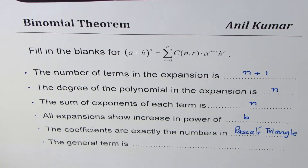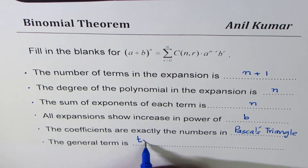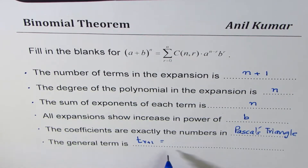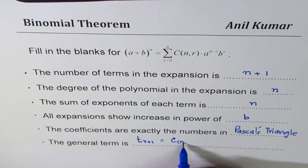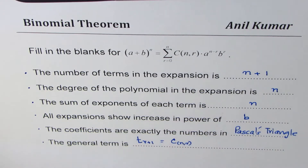The last one: the general term — now that's very important in binomial theorem. We take the (r+1)th term as the general term and write it as T sub r+1. So the (r+1)th term is the general term, and the formula is given accordingly.